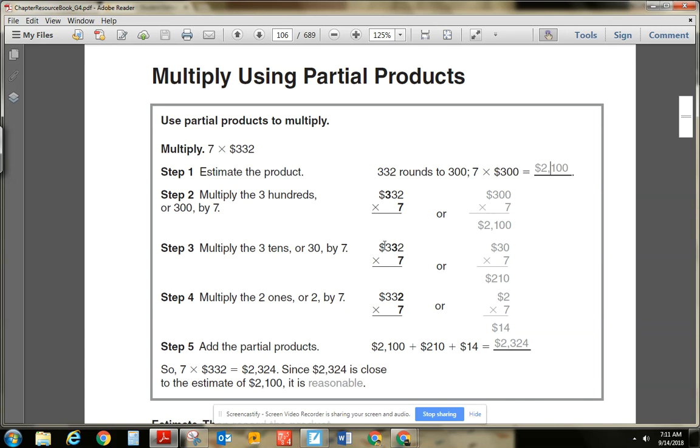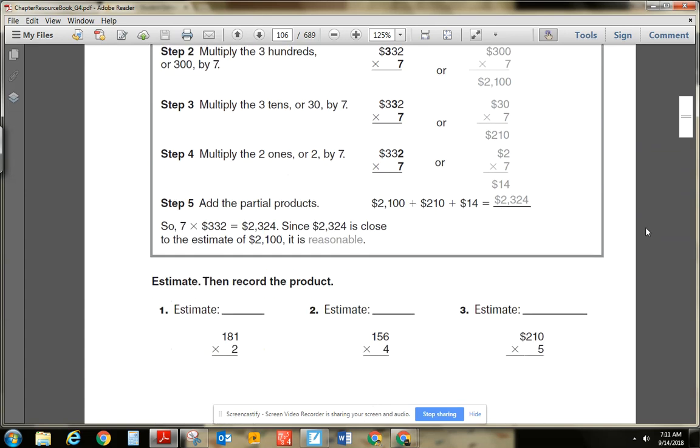Then they multiply 3 times, or 30 times 7. That gives us 210. And then they multiply the ones place. So 2 times 7 is 14. Okay. And then we have to add all those products up together to get our final product. And that's pretty close to our estimate. So I would say that it's a reasonable answer.